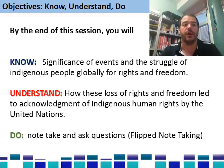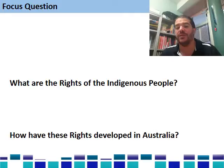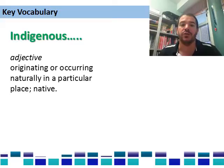Let's get practicing that note-taking and questioning. The focus questions for this session are: what are the rights of the indigenous people and how have these rights developed in Australia? A key vocabulary word: indigenous — defined as being native or originating from a particular place. In Australia, the term indigenous applies to both the Australian Aboriginal people and also the Torres Strait Islander people.